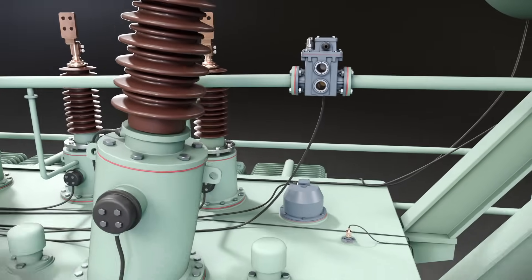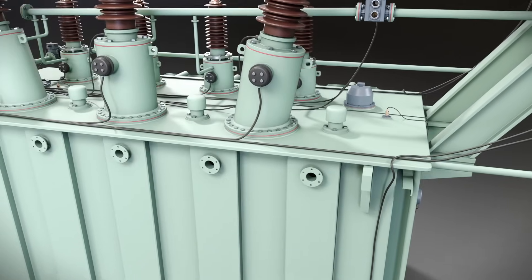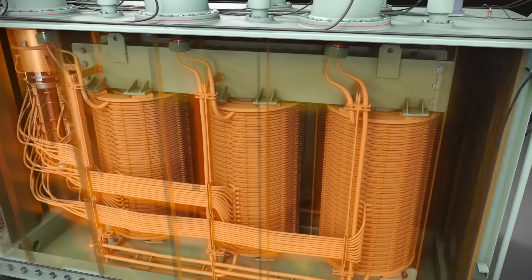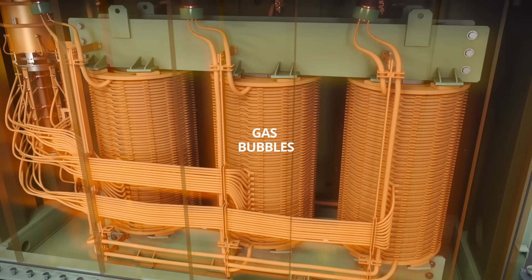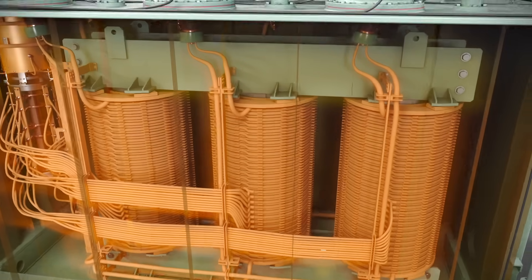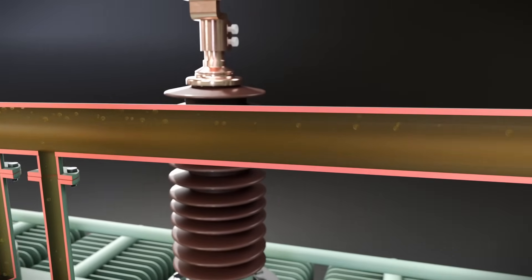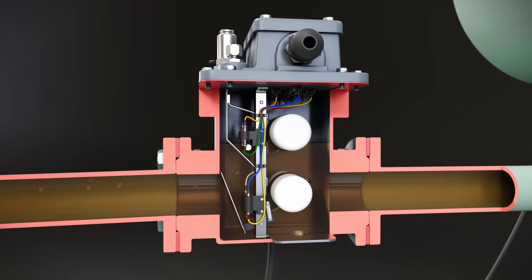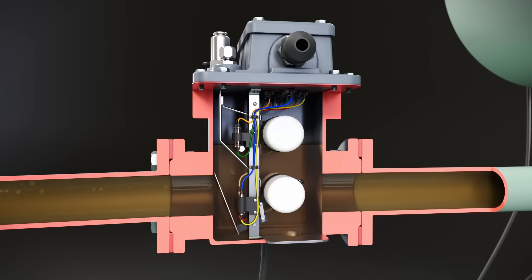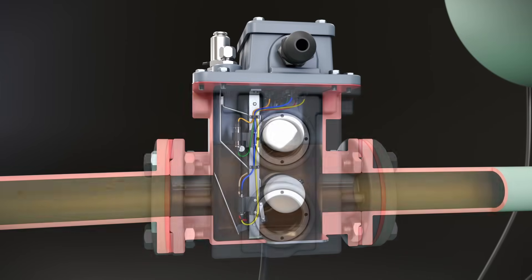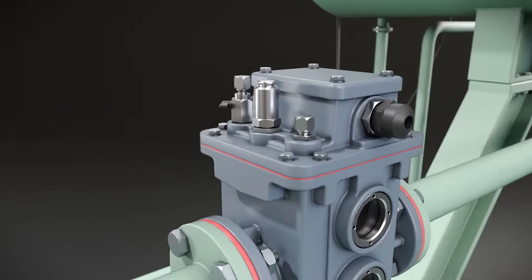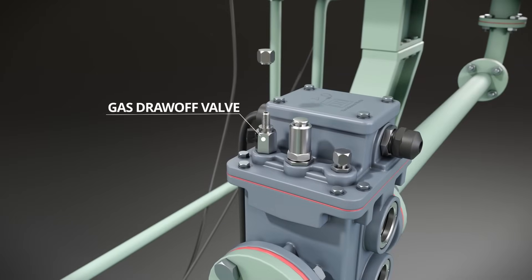During transformer operation, heat generated due to the resistance of the windings causes the decomposition of the surrounding oil and paper insulation, producing gases such as hydrogen, methane, and acetylene. These gas bubbles rise in the transformer tank and move toward the conservator through the connecting pipeline. Once the gas bubbles reach the Buchholz relay, they accumulate in its housing. This collected gas can be extracted through a gas draw-off valve and analyzed to assess the insulation health of the transformer.